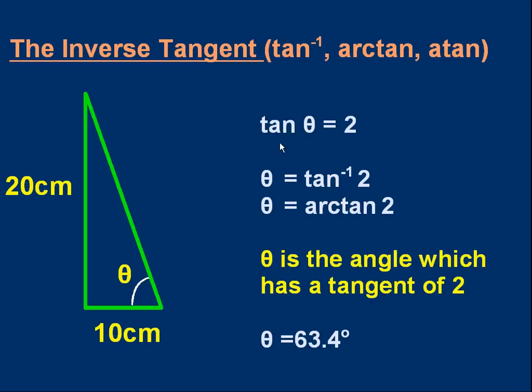First of all, let's write down what the tangent is. Tan theta is obviously 20 over 10. It's 2. We want to find theta. Let's rewrite this with theta as a subject. Theta equals something. And what we write is this. Theta equals tan minus 1, 2. Or we could write theta equals arctan, 2.